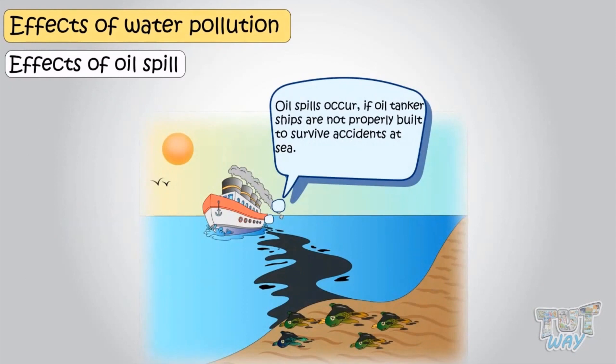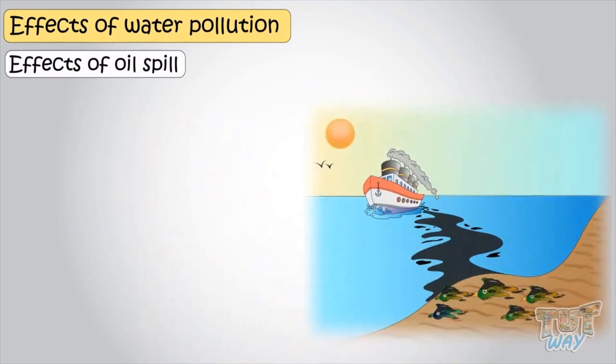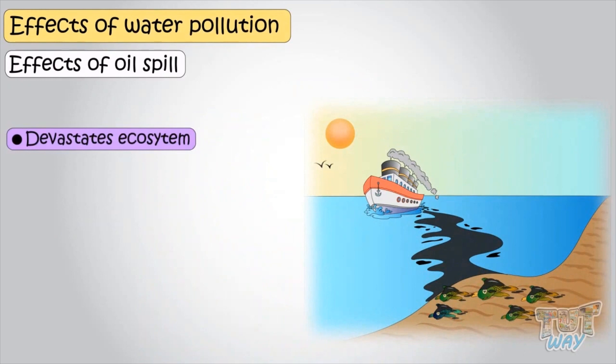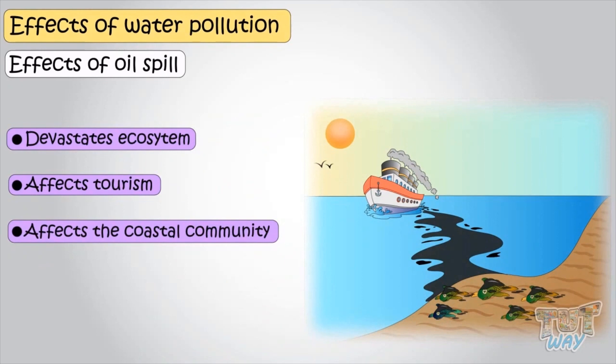Oil spills devastate ecosystems and also affect tourism. Oil spills affect the coastal community rather than the people responsible for the oil spill.